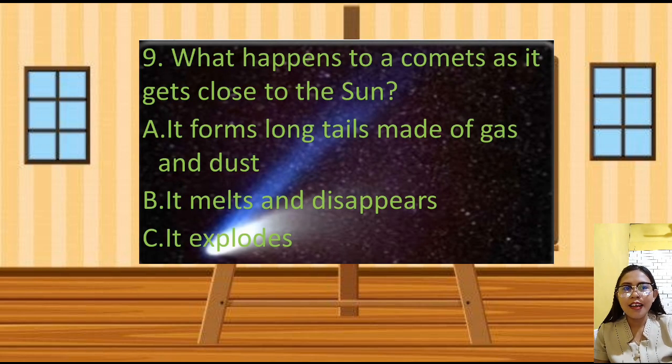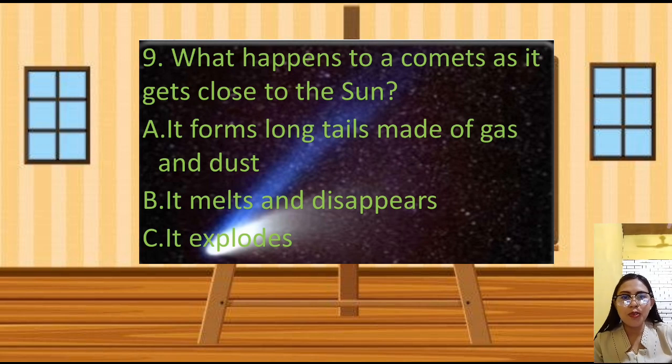Let's have number 9. What happens to a comet as it gets close to the sun? Yes, the correct answer is letter A. It forms long tails made of gas and dust.